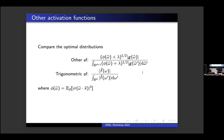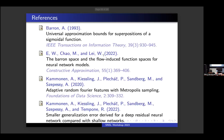Some papers to advertise: Barron 1993, E. Weinan's paper from 2022, and our own papers from 2020 and 2021 — the first on the adaptive random Fourier features algorithm, and the second on smaller generalization error for deep residual neural networks compared to shallow ones. That's it.